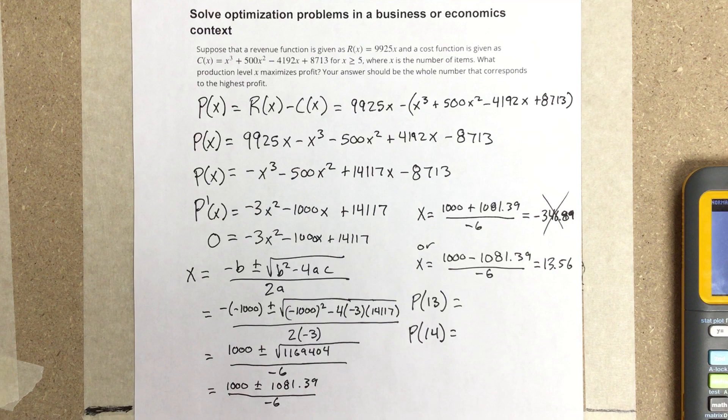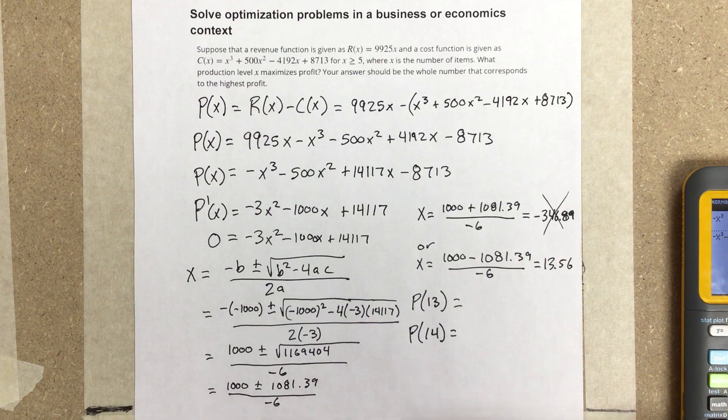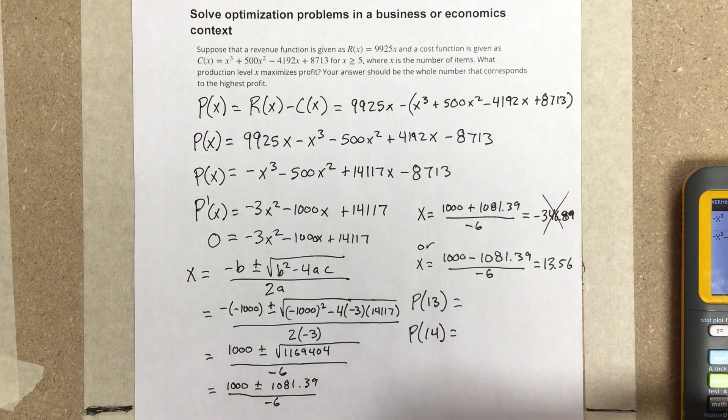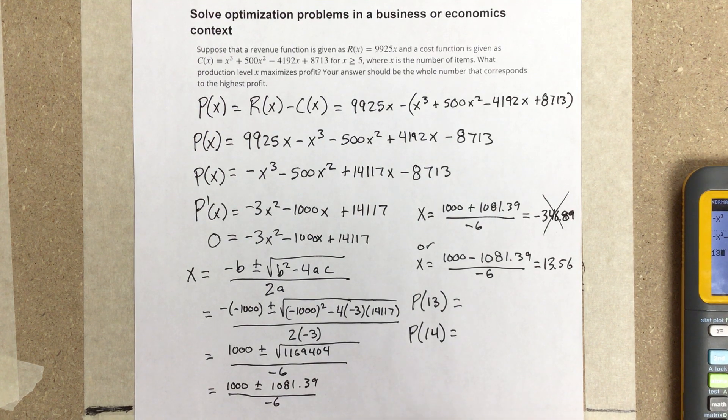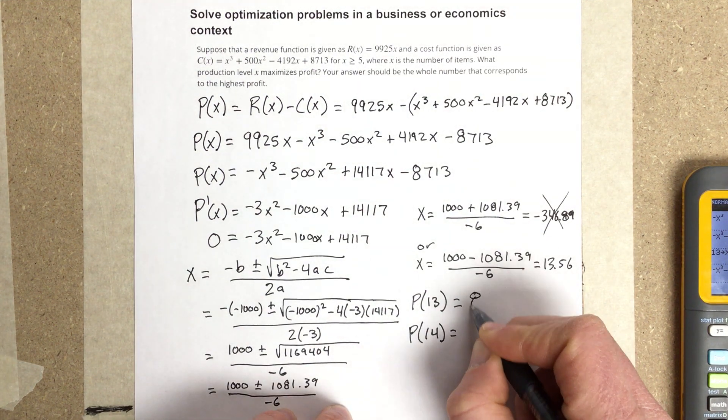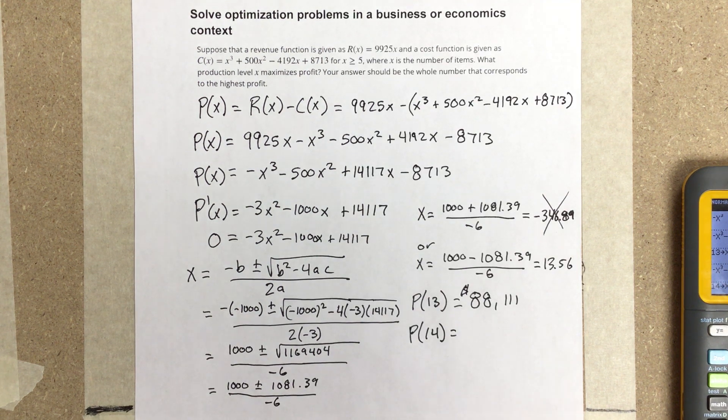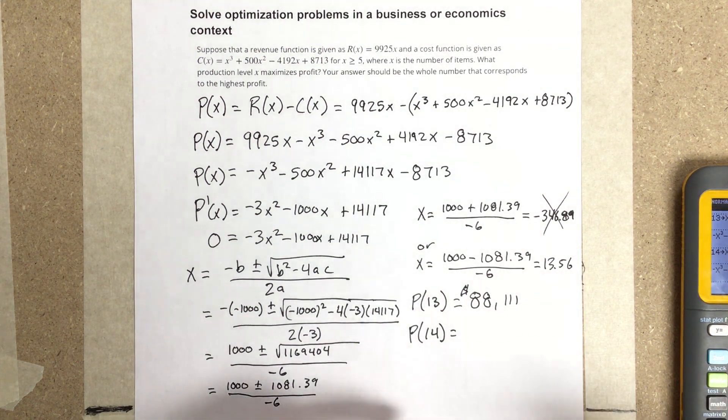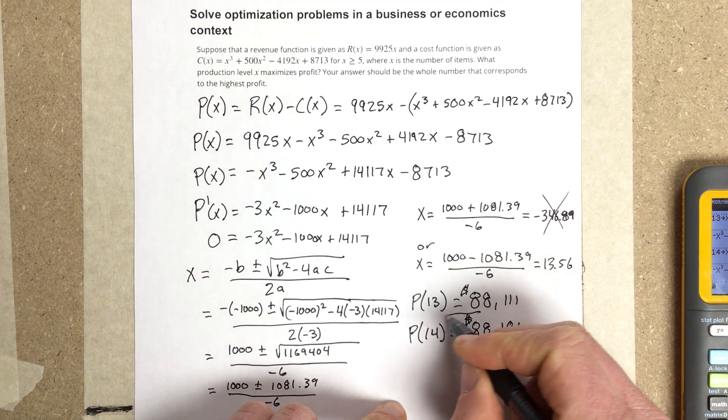So we're going to plug that equation in for 13 to start. That gives you $88,111. Now plug in 14. That's $88,181. So you can see the maximum profit would be 14 items here.